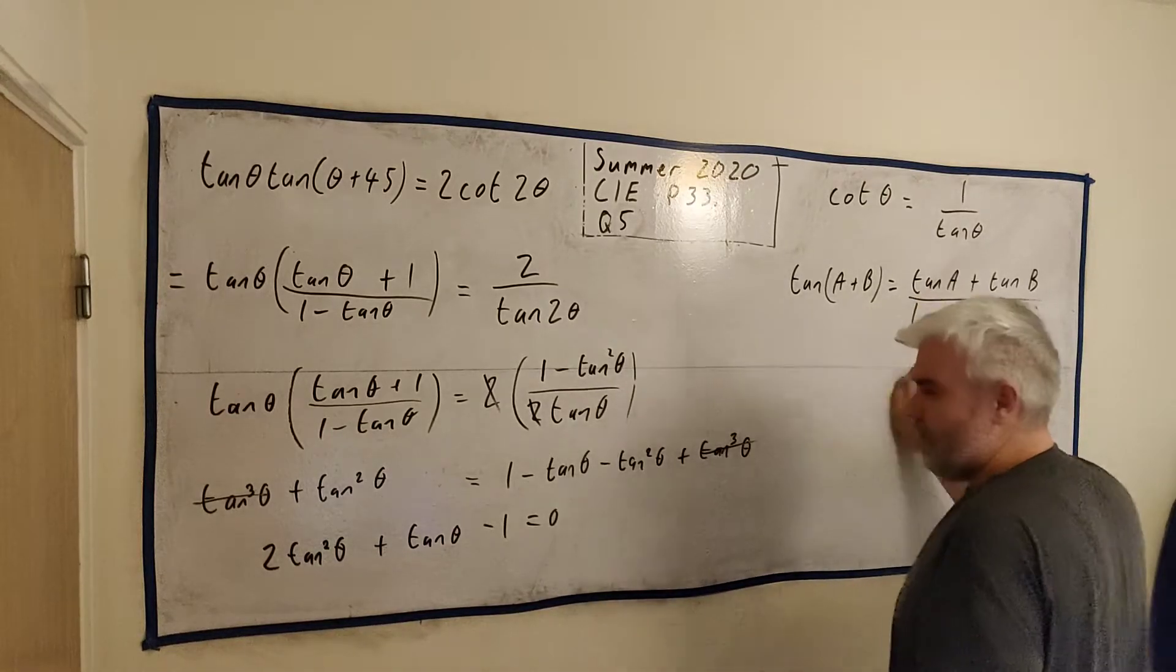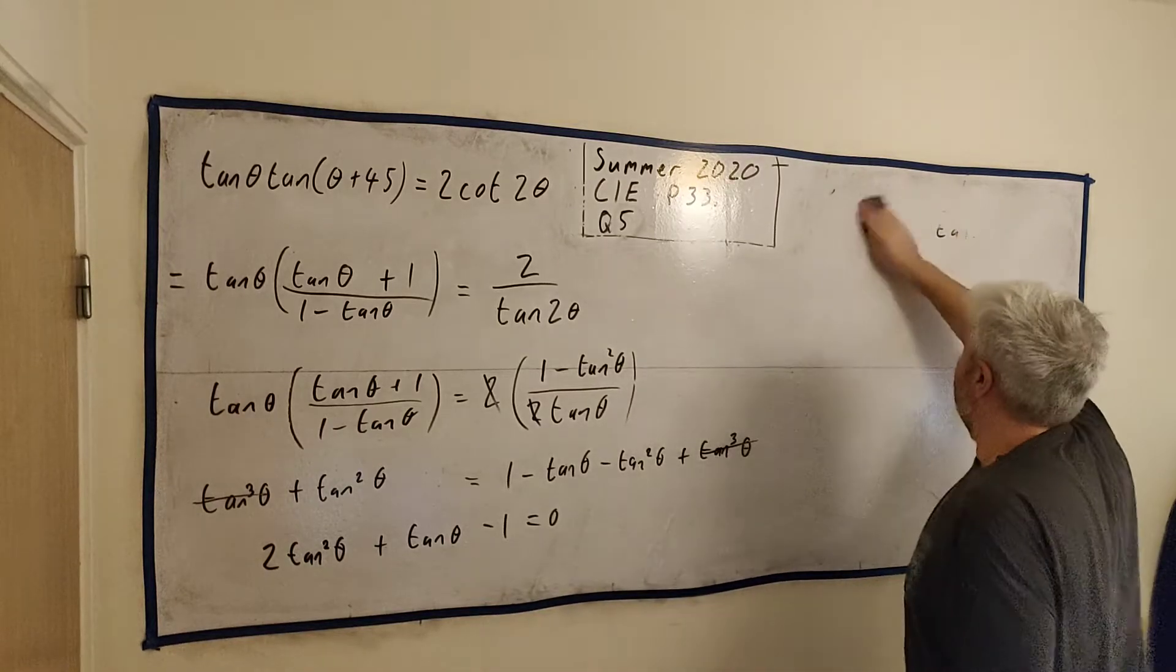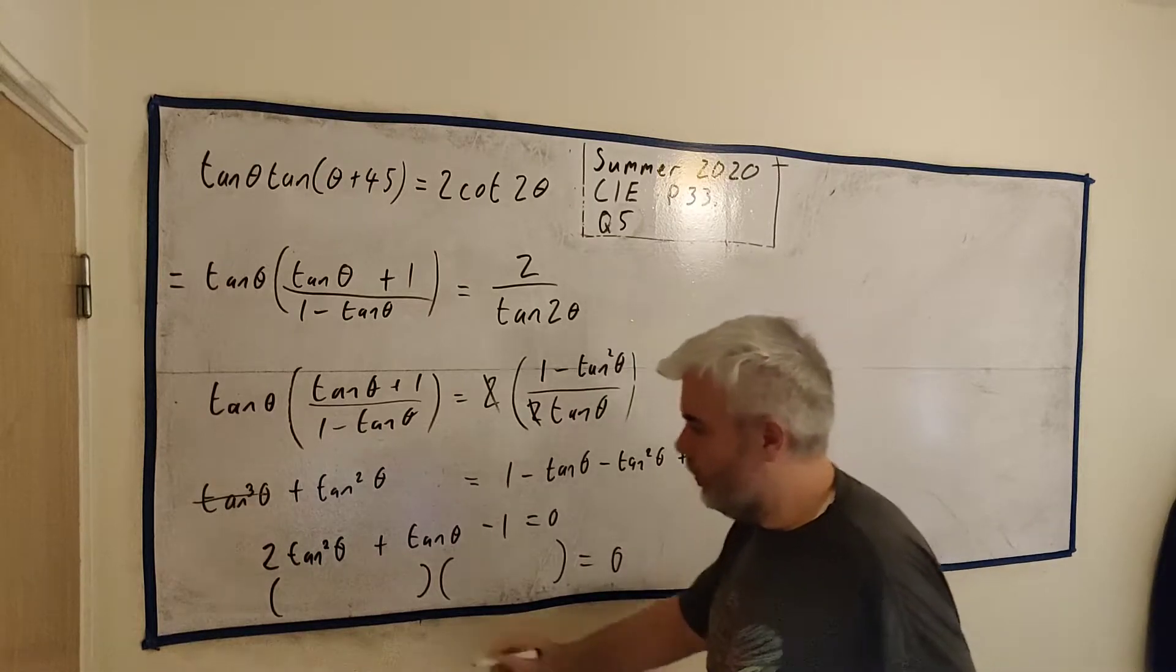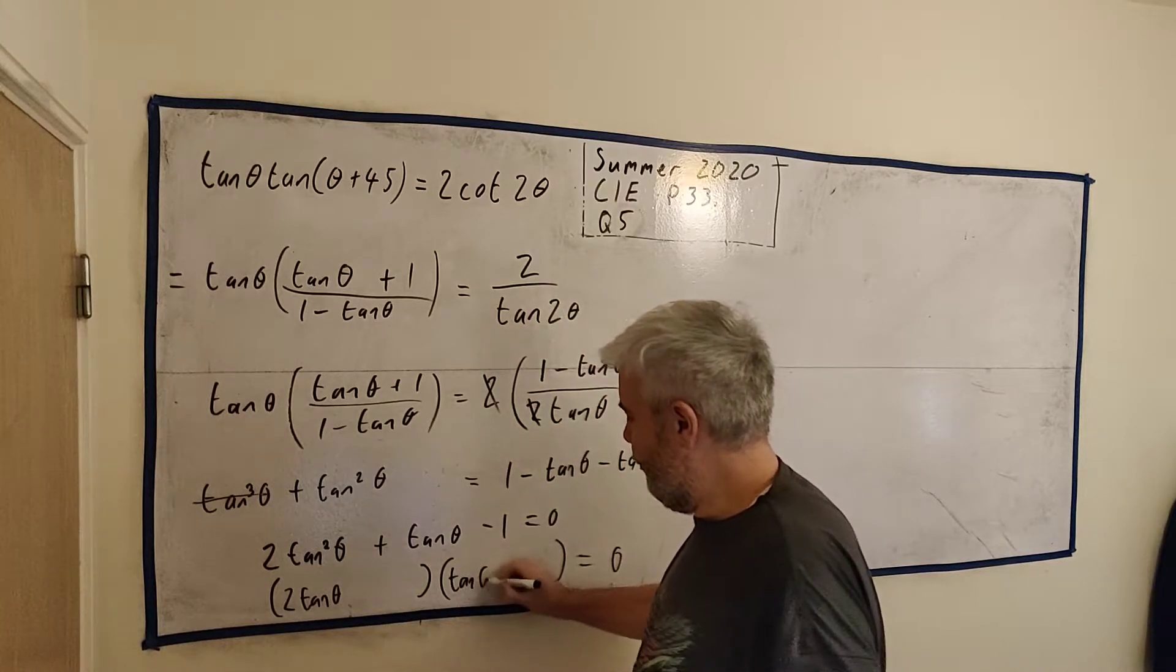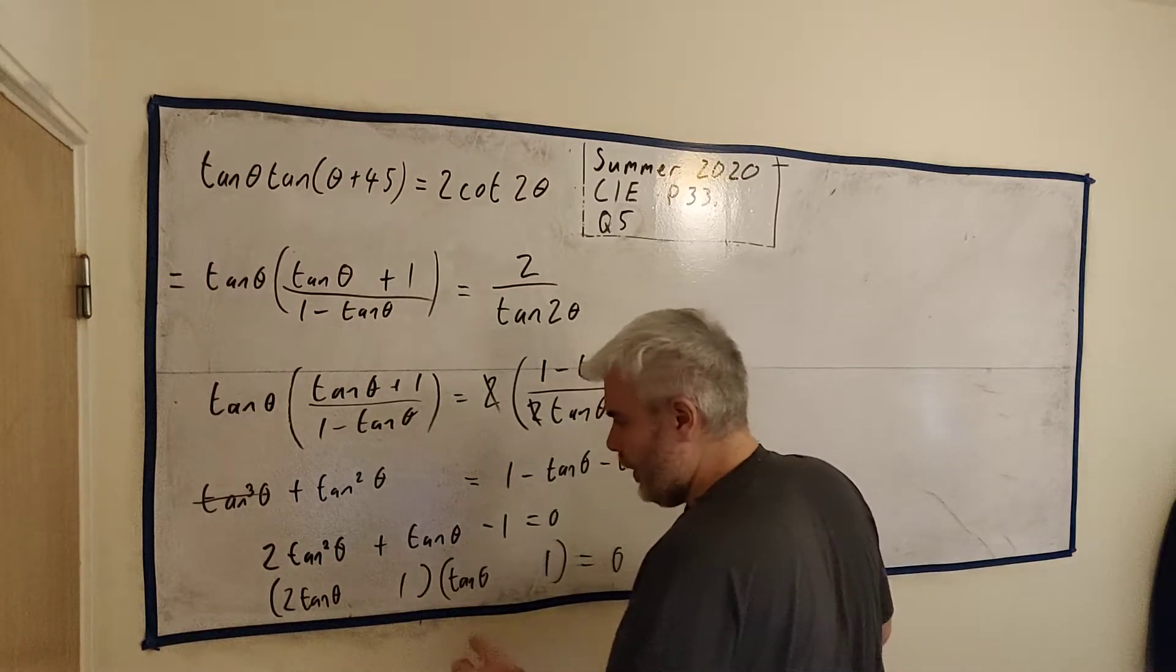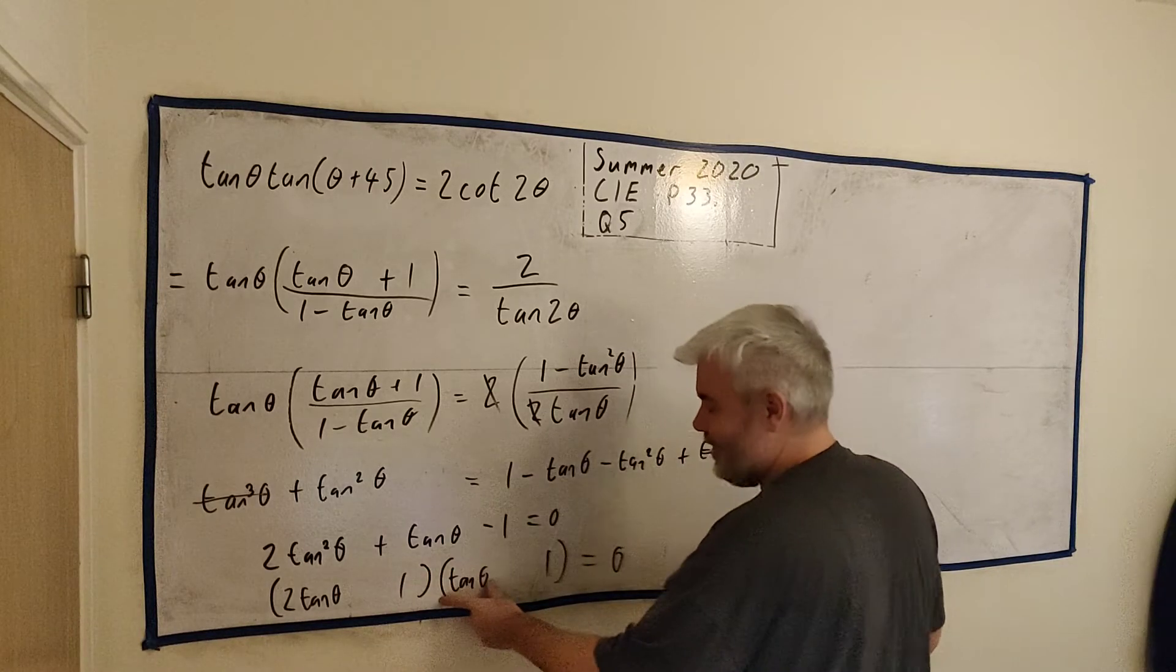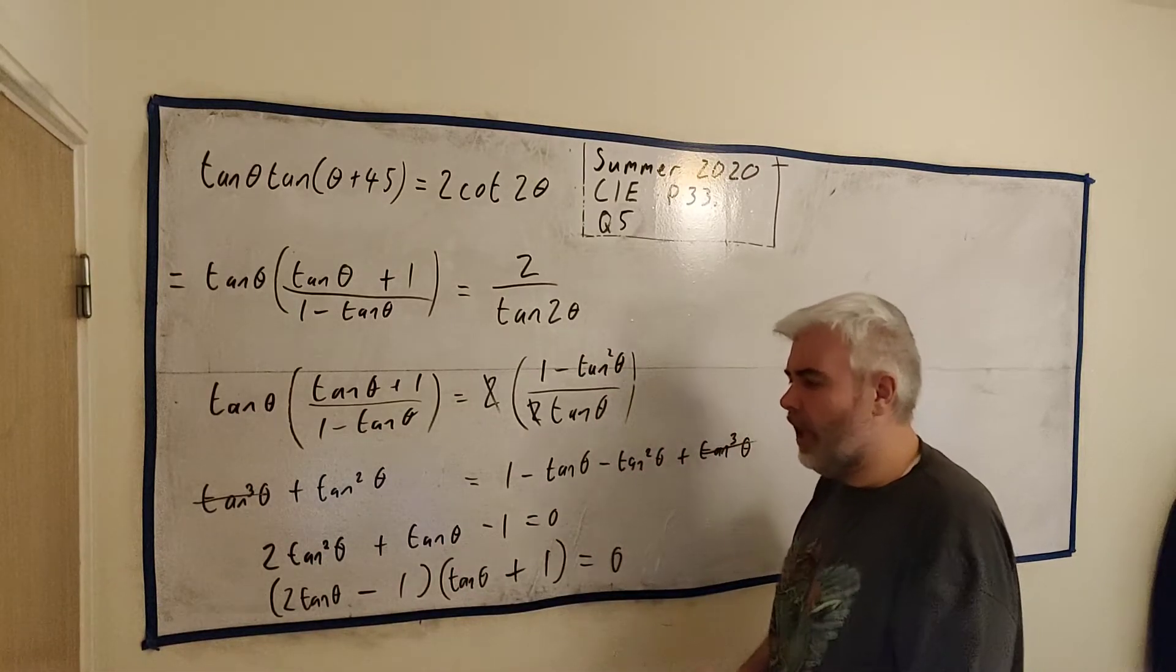that's the quadratic they wanted us to find and we can go ahead and solve that I think we can factorize it yes we can. Okay let's go ahead and factorize this open two big brackets for it equals zero we're going to need a 2 tan θ and we're going to need a tan θ and one and one will make one so let's see if we can make this work 2θ times 1 minus 1 θ times sorry one times tan θ will make the one tan θ here so that's a minus that's a plus